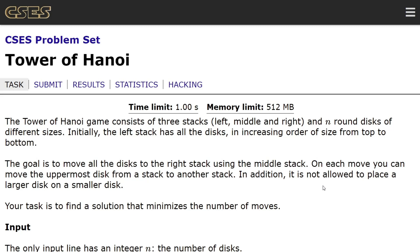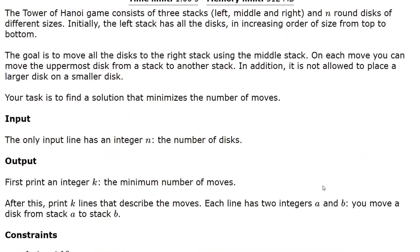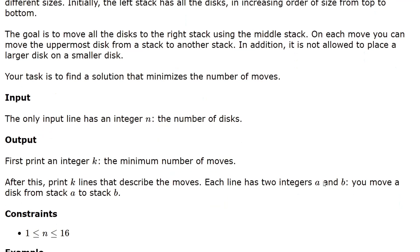Your task is to find a solution that minimizes the number of moves. The only input line has an integer n, the number of discs. First, print an integer k, the minimum number of moves. After this, print k lines that describe the moves. Each line has two integers a and b — you move a disc from stack a to stack b.